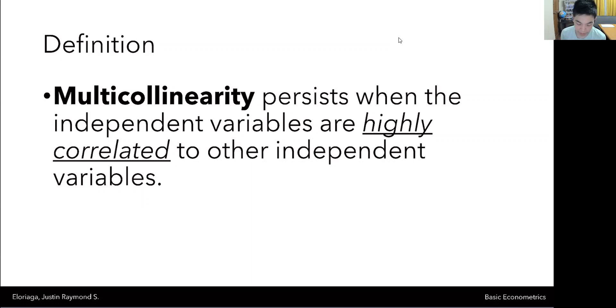So if you recall, if we have a regression equation, say y sub i is equal to beta naught plus beta 1 x1 plus beta 2 x2 plus u sub i, that's your error term. Well, in this case, you have two independent variables and then you have one dependent variable.